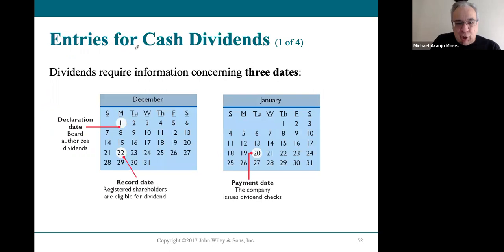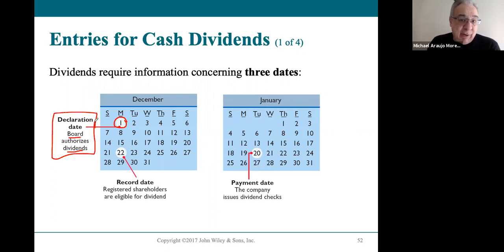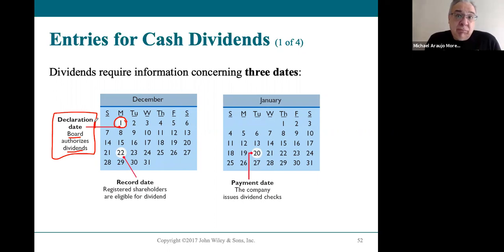There are three very important dates to know about dividends. Here we have a calendar with December and January. On December 1st, the board of directors announces they are going to pay a dividend of 50 cents a share — that is called the declaration date. On the declaration date, the company has formally announced they will pay a dividend, so they've actually created a liability — dividends payable — because they've promised their owners a dividend.